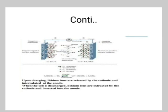Lithium-ion phosphate has a cathode of iron phosphate and an anode of graphite. It has a specific energy of 90–120 Wh/kg, a nominal voltage of 3.2–3.3V, a charge rate of 1C, and a discharge rate of 1C to 25C.